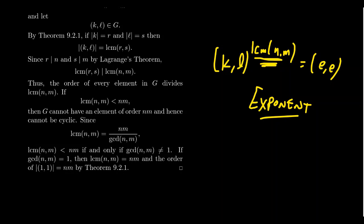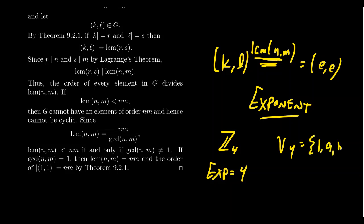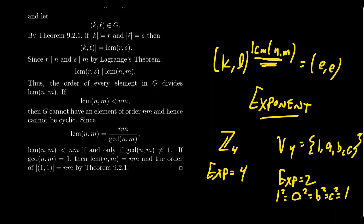For example, compare the cyclic group Z4 versus the Klein 4-group. In Z4 the exponent is four, since there's an element of order four (like 1 or 3) and nothing smaller works for all elements. In the Klein 4-group with elements A, B, and C, the exponent is 2, because A², B², C², and the identity squared are all equal to the identity. So the group has order four, but a smaller number — two — works as the exponent for the whole group.